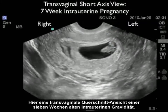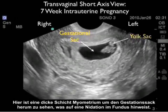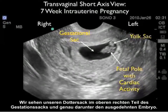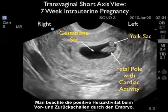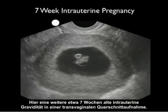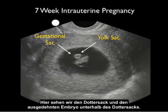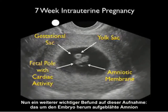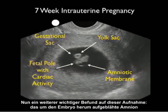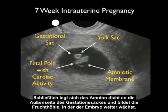Here's a transvaginal short axis view of a 7-week intrauterine pregnancy. The gestational sac is located in the center of the uterus, with a good amount of myometrial mantle surrounding it, signifying its fundal location. We see the yolk sac or cheerio sign and the fetal pole stretched out below the yolk sac with positive cardiac activity. Also visible is the amniotic membrane billowing out from around the fetal pole. Eventually the amniotic membrane will plaster down on the margins of the gestational sac to form the amniotic cavity in which further fetal growth will occur.